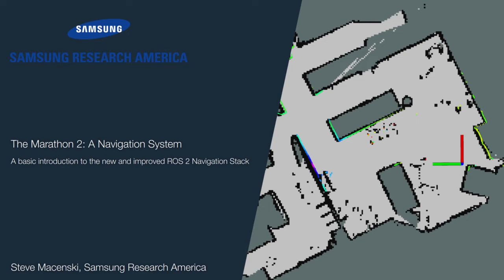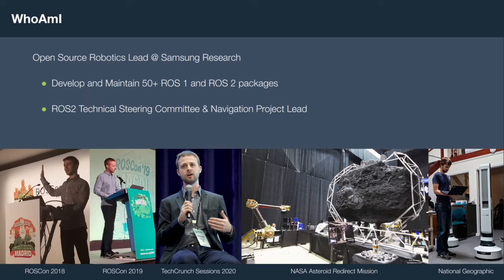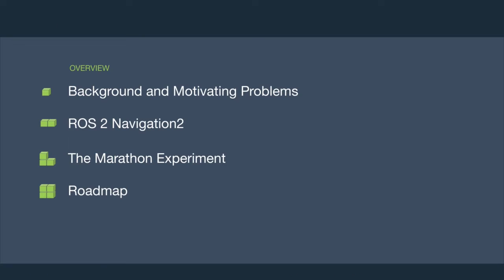Hello and welcome to our talk. Today we're going to be talking about the Marathon 2, a navigation system. This is going to be a basic overview of the new and improved ROS2 navigation stack. I am the open-source robotics engineering lead at Samsung Research America. I develop and maintain a large variety of ROS1 and ROS2 packages around navigation and robot perception. I'm also on the ROS2 technical steering committee and the navigation project lead.